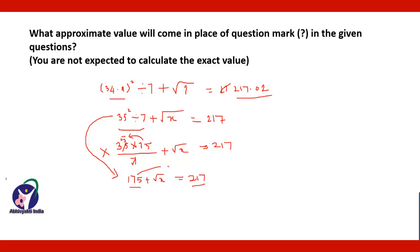Then shift 175 to this side. Since it is addition, it will become subtraction, so you will get: square root of x equals 217 minus 175. Doing this orally, 217 minus 175 — that is square root of x — is equal to 42.